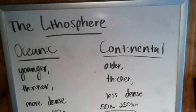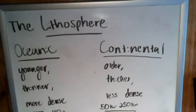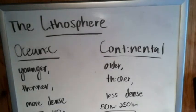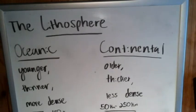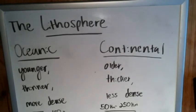At mid-ocean ridges, oceanic lithosphere can only be as thick as the oceanic crust, because that's where magma from the mantle rises up into the oceans. There is pretty much a direct connection between the crust and the flowing part of the mantle at mid-ocean ridges. We still call it lithosphere because the crust is still solid and rigid — it's just very, very thin lithosphere at that point.